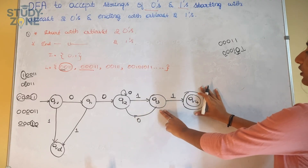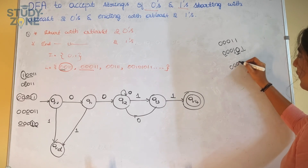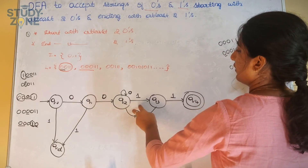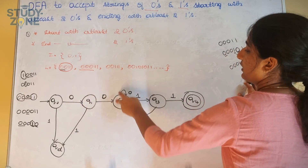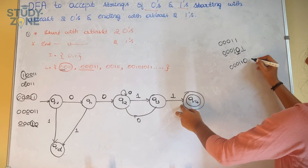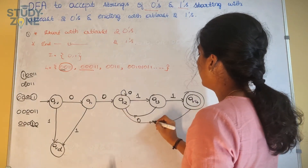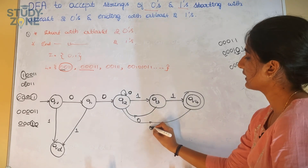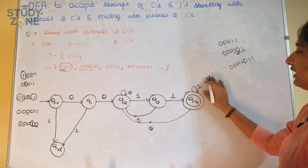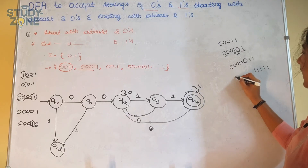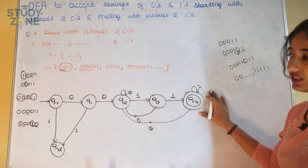q3 on one moves to q4. Now what does q4 do on zero? Consider the string zero zero zero one one one zero zero zero zero one one — that should be accepted. But if after reaching q4 I get a zero, I move back to q2 to wait for one one again. And if in q4 I get a one, I stay in q4, because at the end I can have any number of ones.